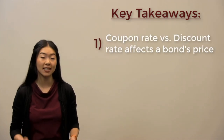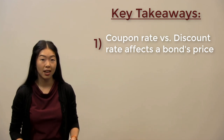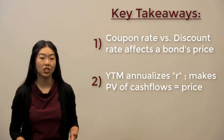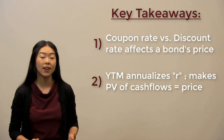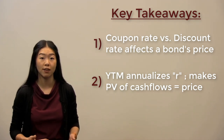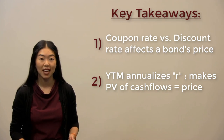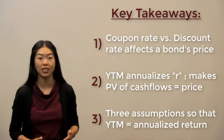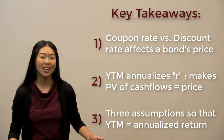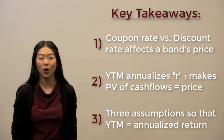To wrap up, the key takeaways from this video are: how the relationship between the coupon rate and the discount rate can affect the price of a bond; how the yield to maturity is essentially an annualized expression of the discount rate that makes the present value of all future cash flows of a bond equal to its price; and the three key assumptions behind the yield to maturity that make it the annualized rate of return that bondholders can expect to earn. Thanks so much for watching.